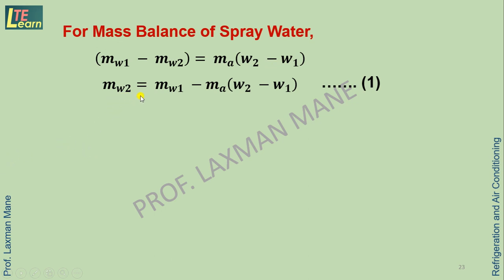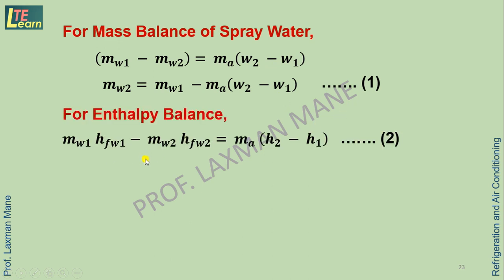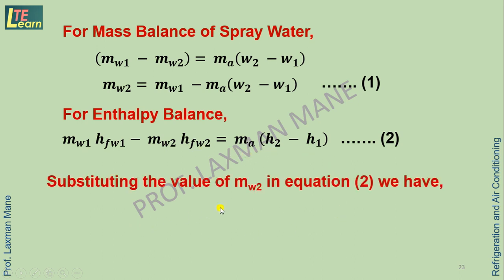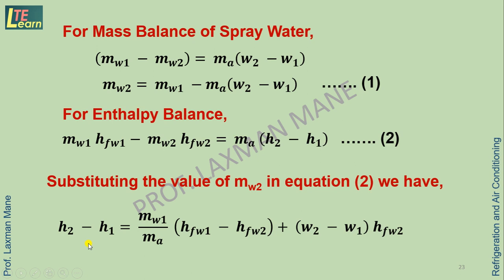The mass balance equation for the heating and humidification process with spray water is: Mw2 = Mw1 − Ma × (W2 − W1). The enthalpy balance is given as: Mw1 × hfW1 − Mw2 × hfW2 = Ma × (H2 − H1). Substituting the value of Mw2 from equation 1 into equation 2, we get: H2 − H1 = (Mw1 / Ma) × (hfW1 − hfW2) + (W2 − W1) × hfW2.